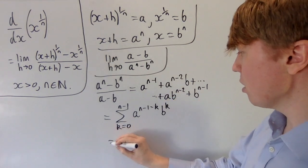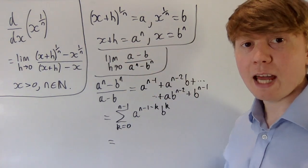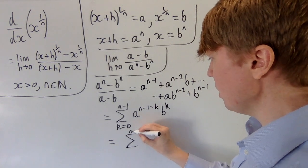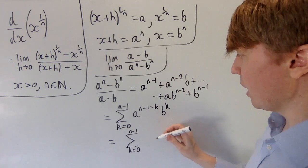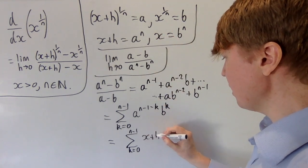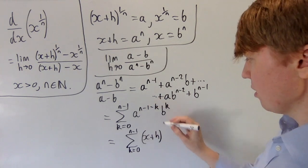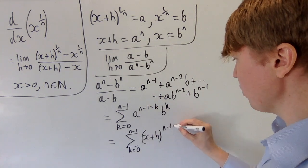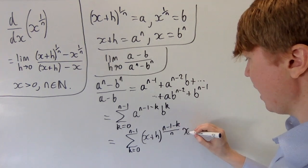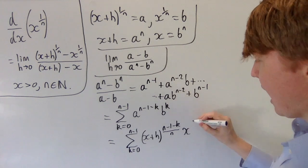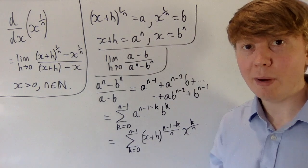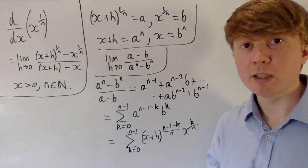Now let's write this in terms of our original expressions with x plus h and x, where we can prove some inequalities. We still have the sum from k equals 0 to n minus 1, but remember a was x plus h to the 1 over n, so we've got x plus h to the 1 over n to the power n minus 1 minus k over n, and b was x to the 1 over n, so we write b to the k as x to the k over n. Now we'll prove some upper and lower bounds on this quantity, and then eventually we'll take limits.